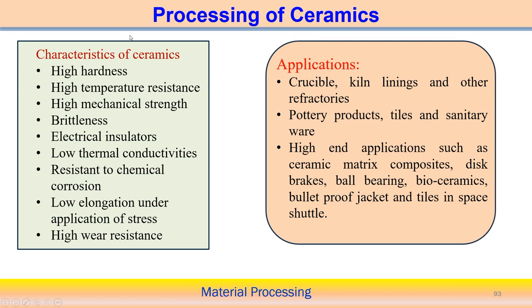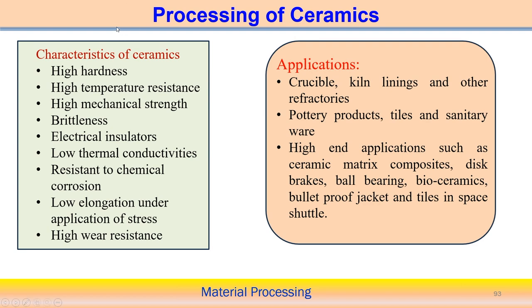With these specific properties of ceramics, we can find lots of applications. Ceramics can be classified in different ways based on composition, properties, and application. Based on composition we can see oxide ceramics, carbide ceramics (metallic carbides), metallic oxides, nitride ceramics, charmed ceramics, and glass ceramics — all different types of ceramics depending on composition.